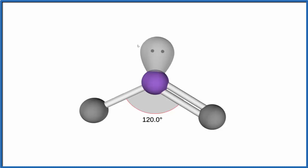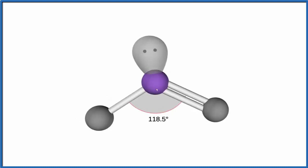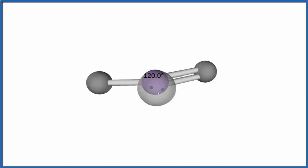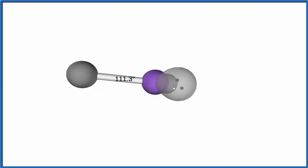With our NOCl we have this lone pair pushing down that'll push these closer together. That's what gives us the 113 number. So our molecular geometry is bent. If we look at the electron geometry where we take into account this pair of electrons, it's actually trigonal planar because it's all in a plane and we have three things.